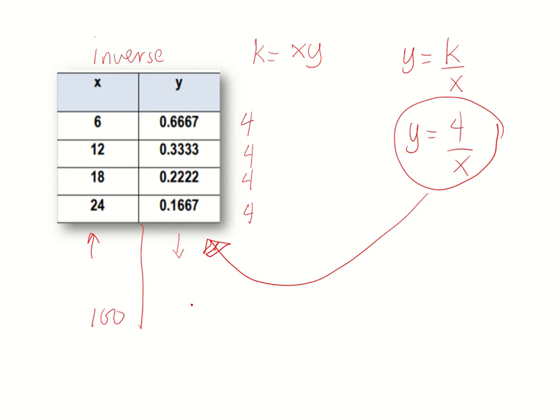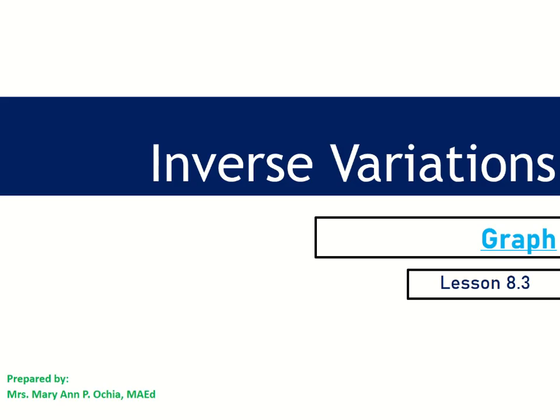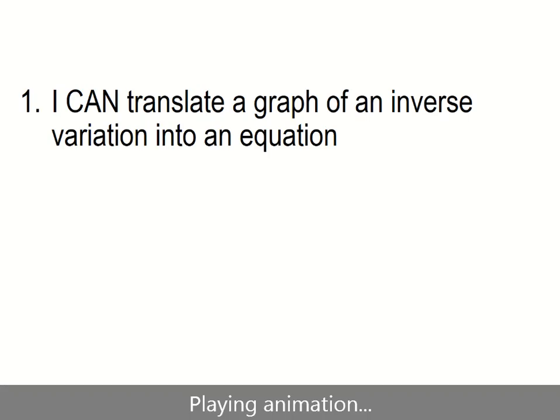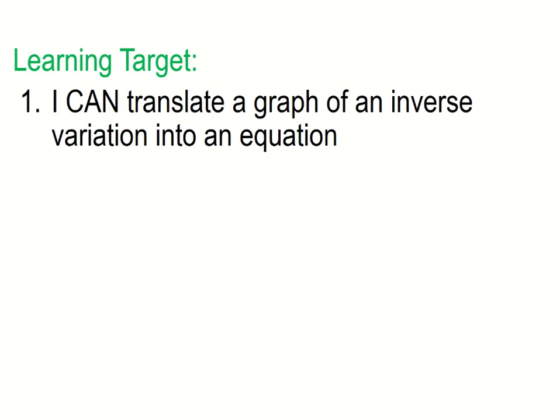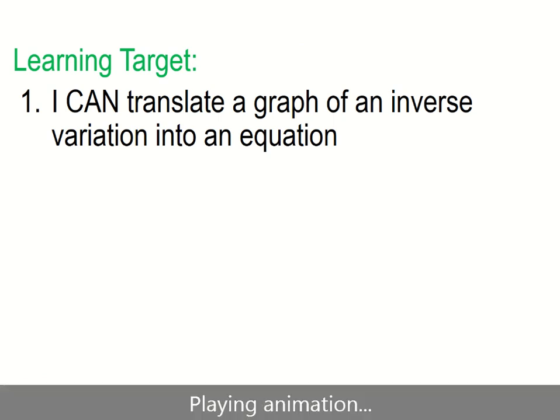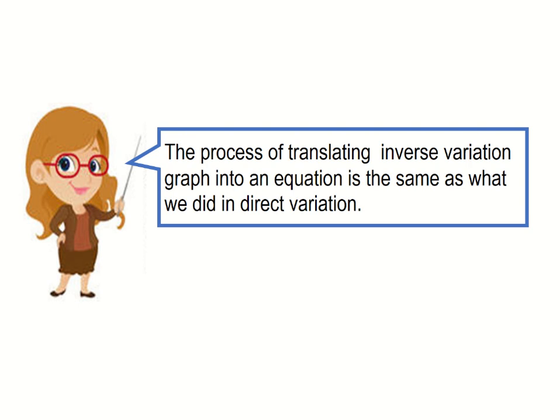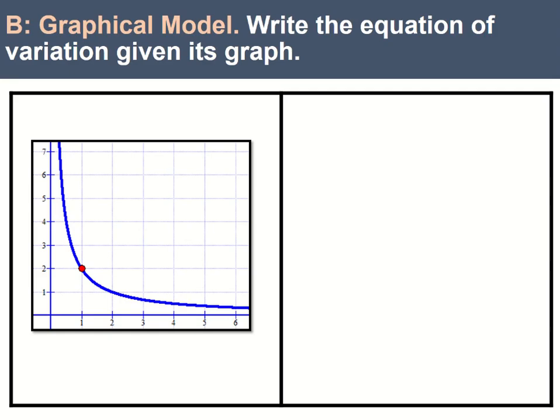For our next lesson, we'll be dealing with still inverse variation but on its graph. We have the learning target, only learning target. I can translate a graph of an inverse variation into an equation. Now, the process of translating inverse variation graph into an equation is the same as what we did in direct variation. Let's have some examples.